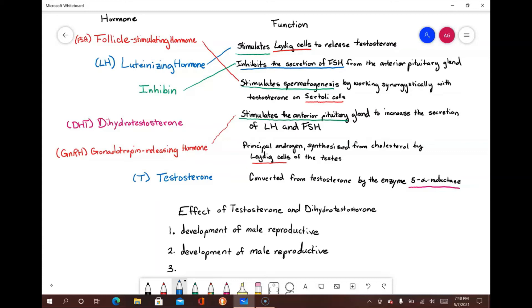Testosterone is the principal androgen and is synthesized from cholesterol by Leydig cells of the testes. Testosterone is converted to dihydrotestosterone through the enzyme called 5-alpha reductase. Together, these two hormones drive the development of male reproductive behaviors, the development of male reproductive structures, and spermatogenesis.